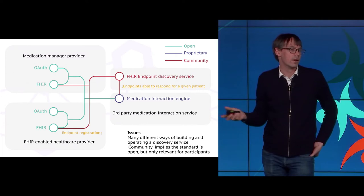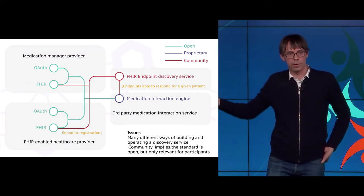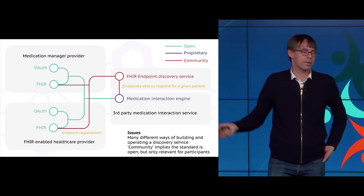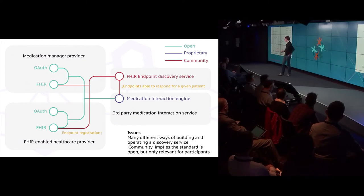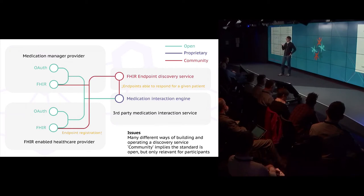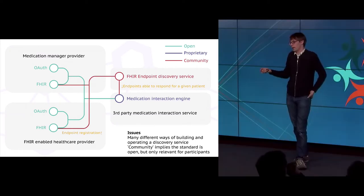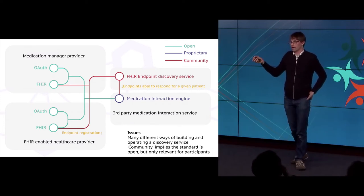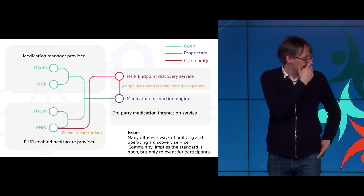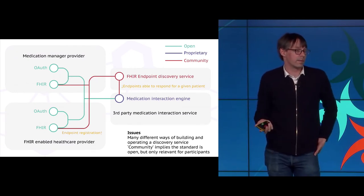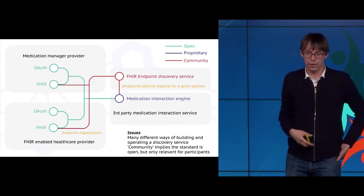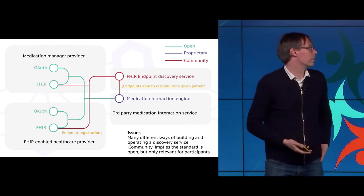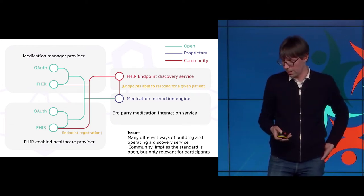There are many different ways you could build this. One could be: just give me a list of everybody I could potentially query to find out data about this patient — pretty simple to implement, doesn't have to store any data. Another could be more complicated, actually tracking who has information about which particular patient for more efficient queries. You could even imagine this service looks like another FHIR endpoint that sits and aggregates data together. In many ways it's very similar to the domain name service — the thing that, when you type Amazon.com or DeepMind.com into your browser, tells you who to talk to.